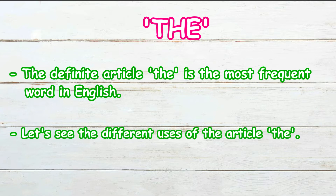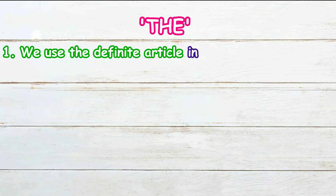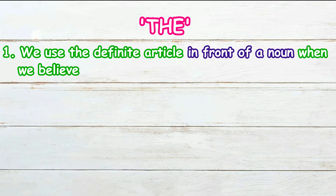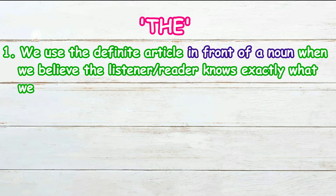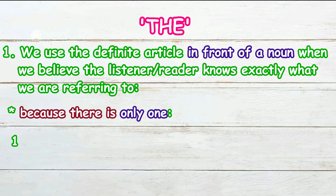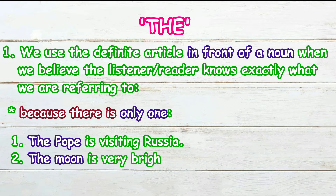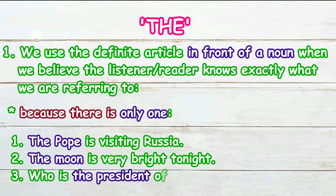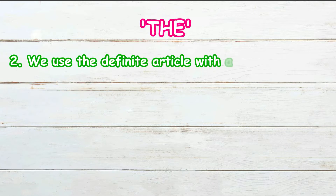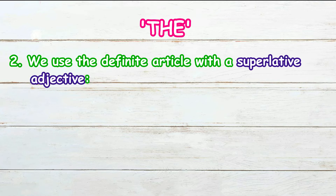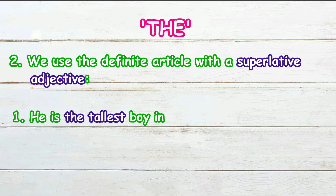The first use is that we use the definite article in front of a noun when we believe that the listener or the reader knows exactly what we are referring to. The reason is that there is only one. For example: 'The Pope is visiting Russia,' or 'The moon is very bright tonight,' or 'Who is the president of France?'